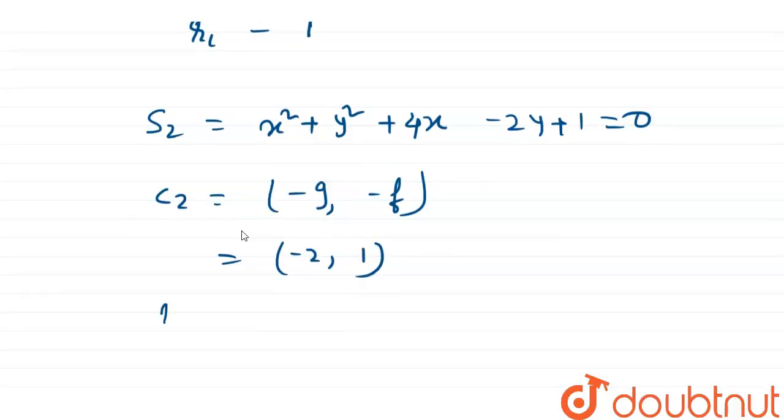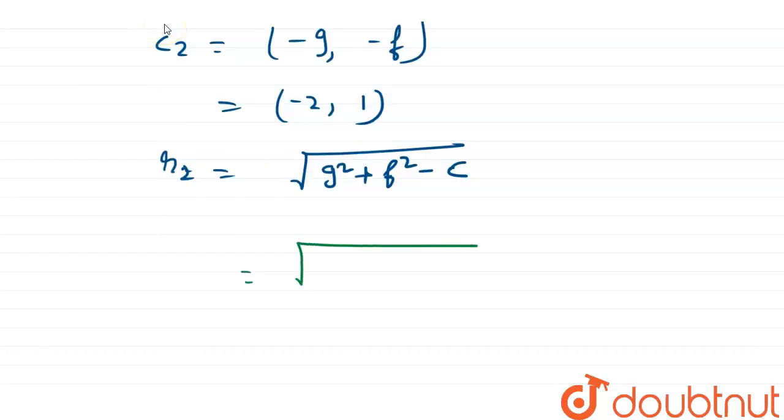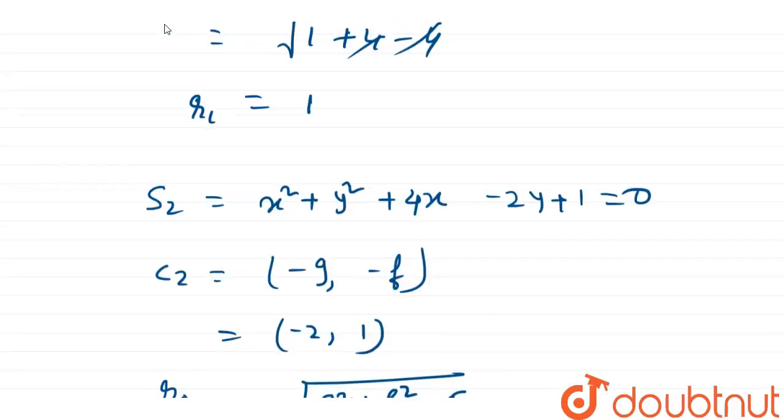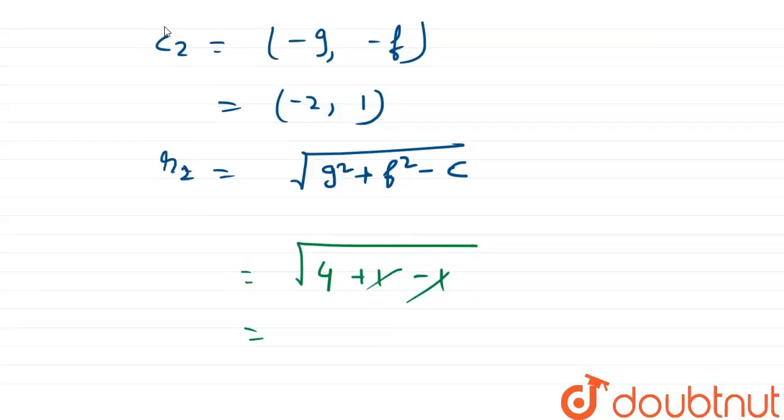Then radius r2, we know that radius formula is g square plus f square minus c. So 4 plus 1 minus c. c is 1. So 4 plus 1 minus 1 equals root 4. r2 equals to 2.